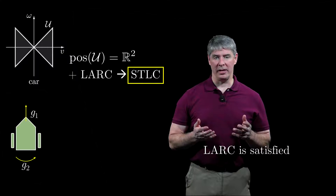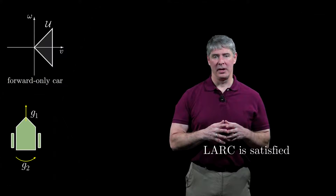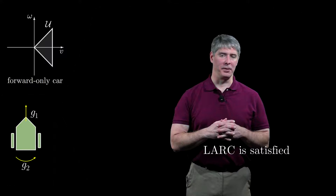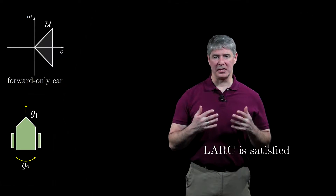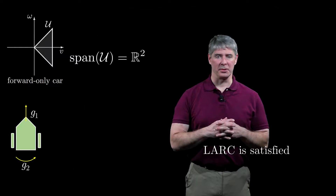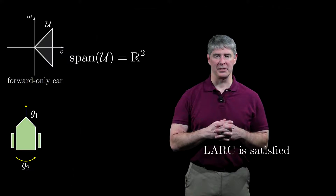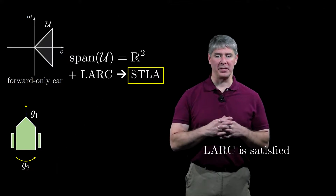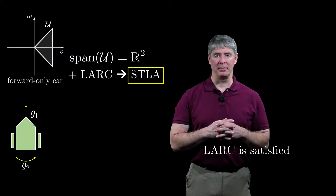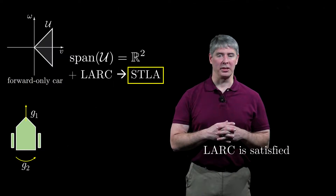On the other hand, if the robot is a car without a reverse gear, the control set is only half of the bow-tie-shaped region. This control set spans the control space but does not positively span the control space. Therefore, the car without a reverse gear is small-time locally accessible from all configurations, but it's not small-time locally controllable.